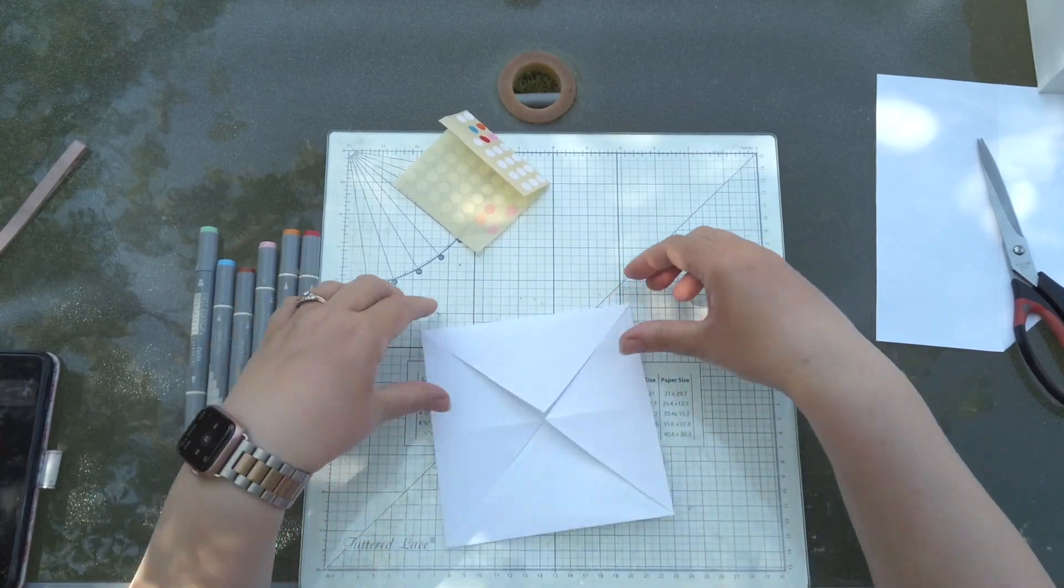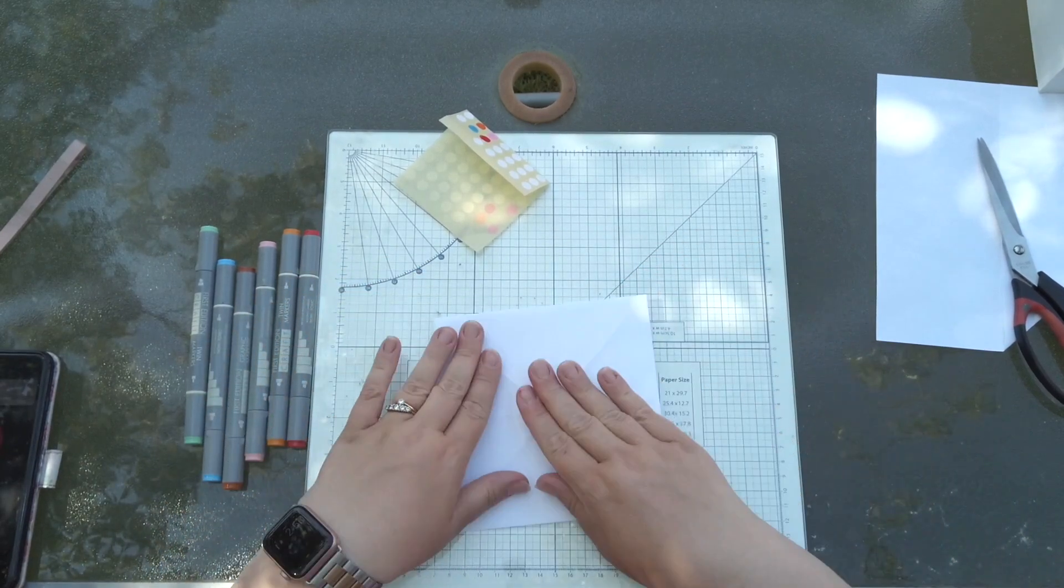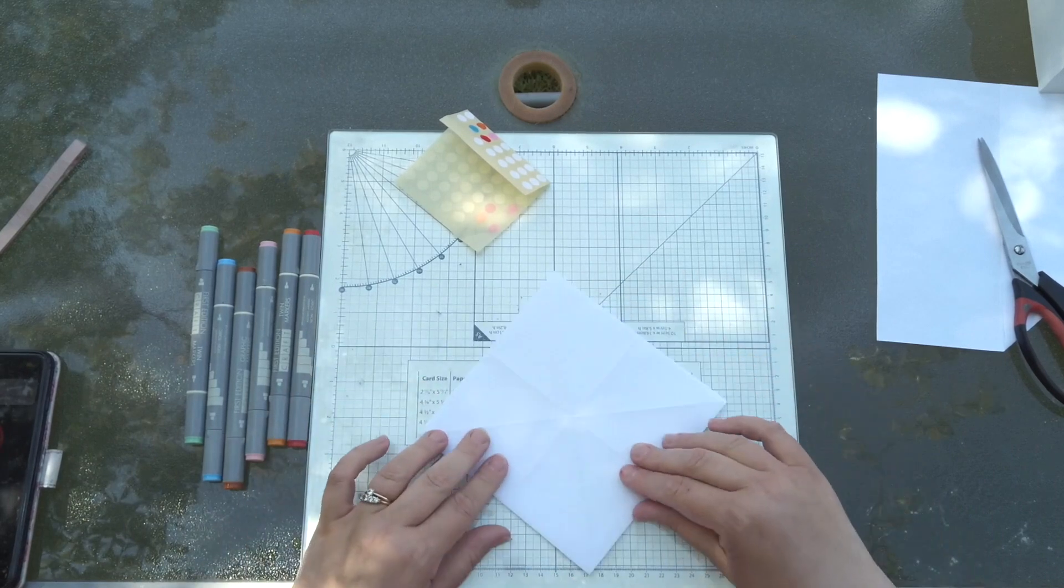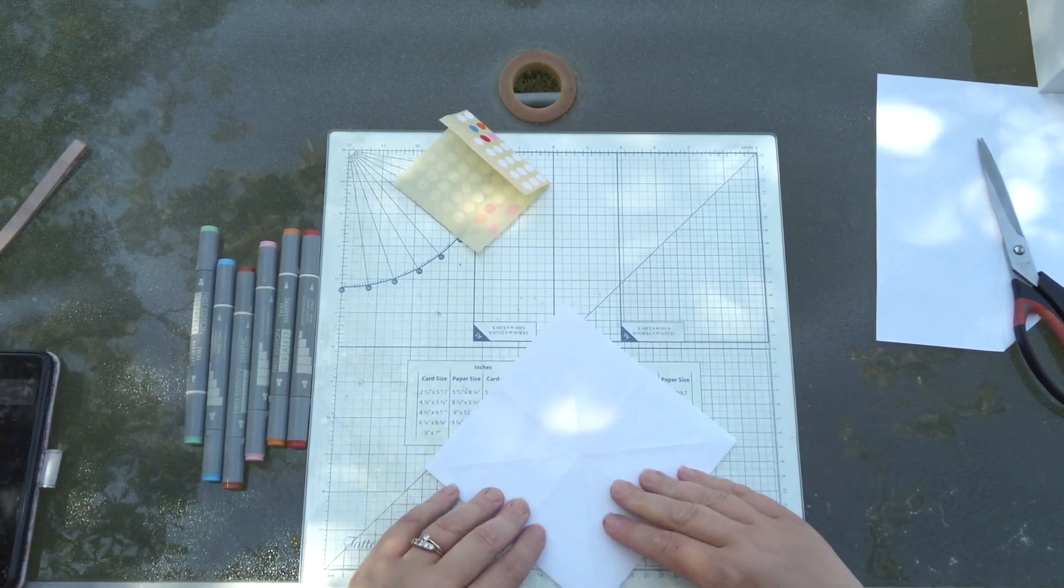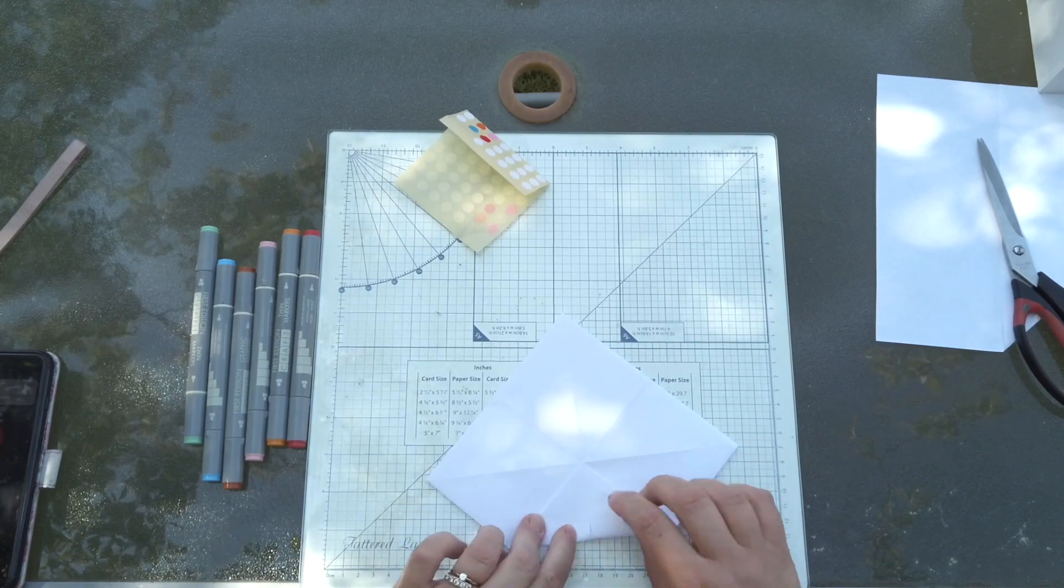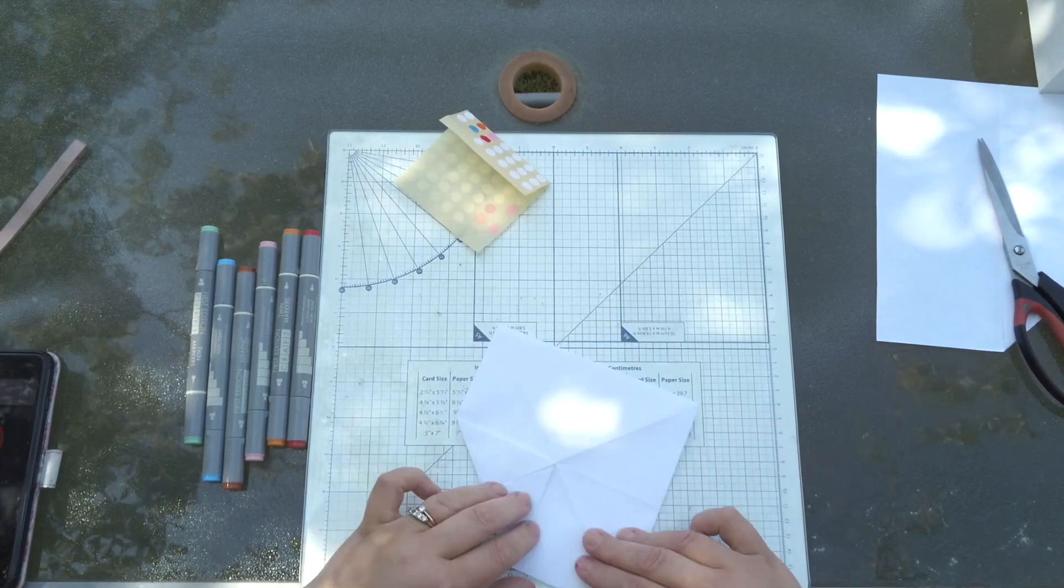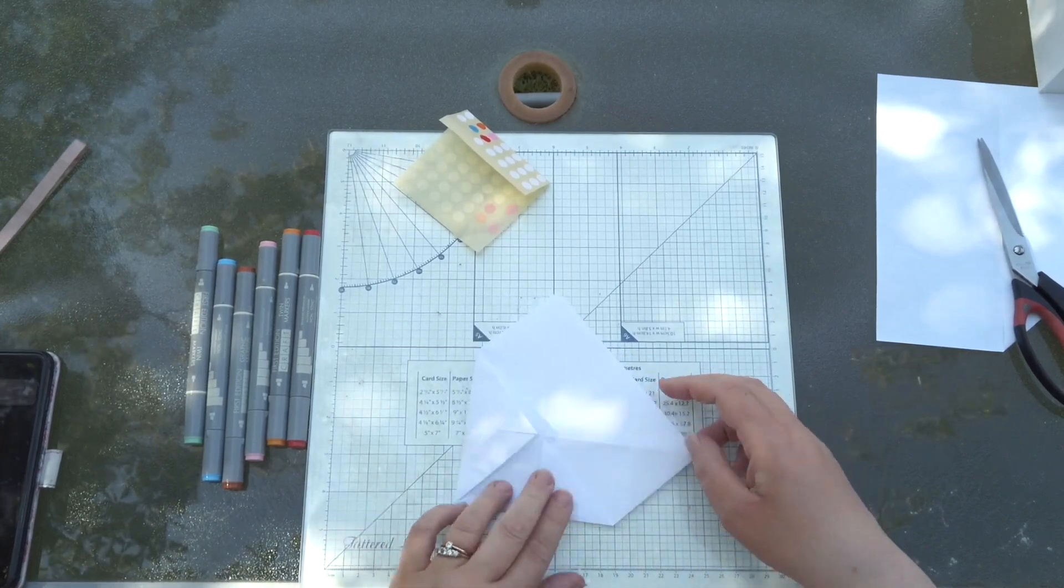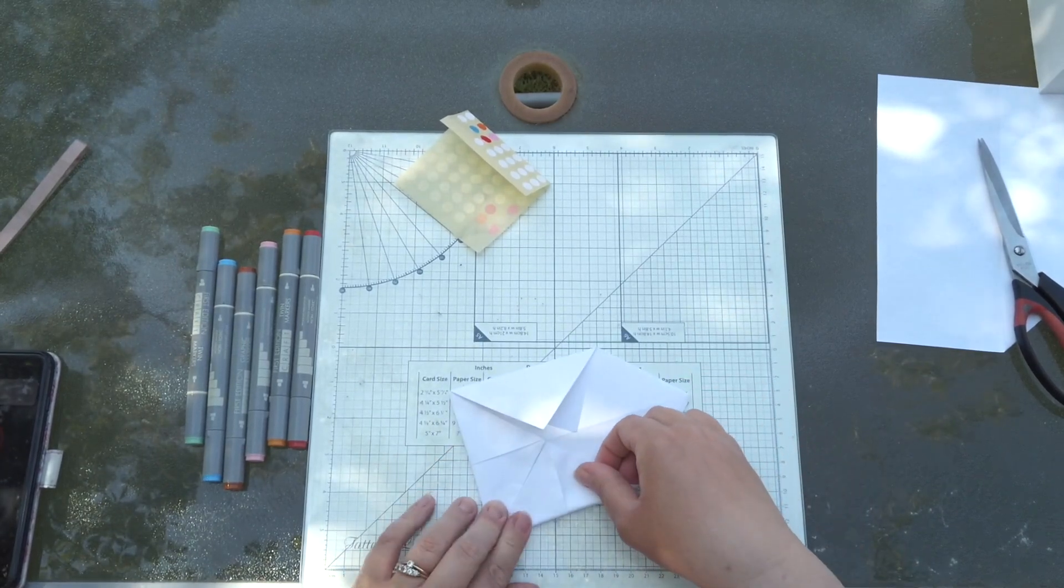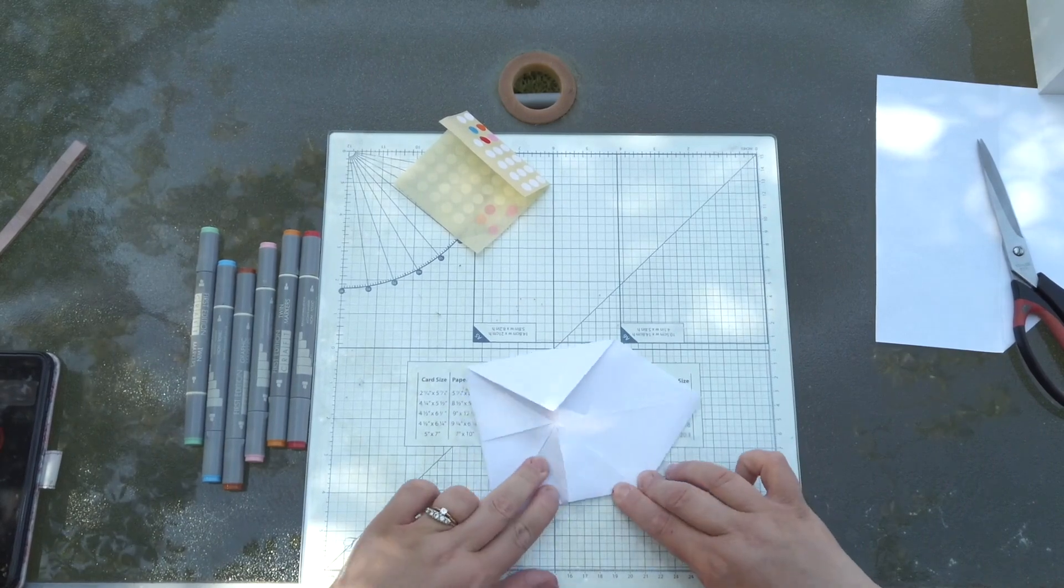Now all those ones are finished. You need to turn it over so you've got a square again and you do the same again. You're going to take these corners into the middle all the way around. Press down, that's a bit harder now because the paper's getting thicker because we're doing more layers.